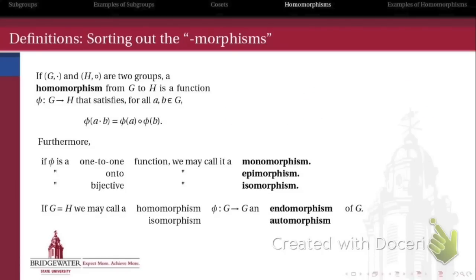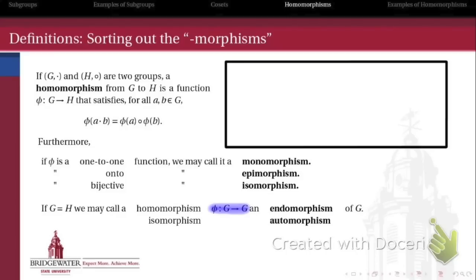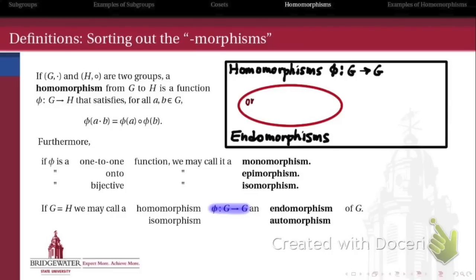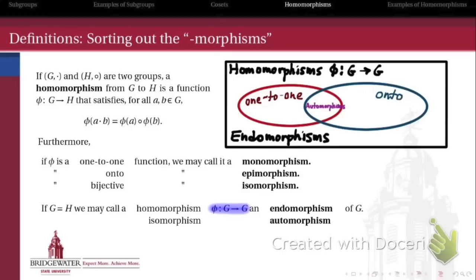If the groups G and H that the homomorphism connects are the same group — in other words, if this is a function from a group to itself — we use additional terminology. A homomorphism from a group to itself is called an endomorphism. And a homomorphism from a group to itself that also happens to be both one-to-one and onto is called an automorphism of that group. So we have many different flavors of morphism, but they're all just special cases of homomorphisms from one group to another.